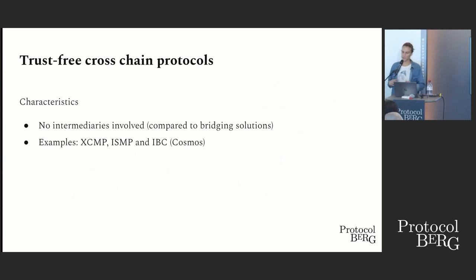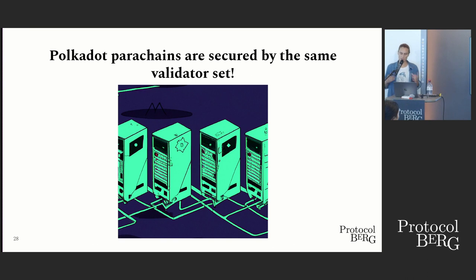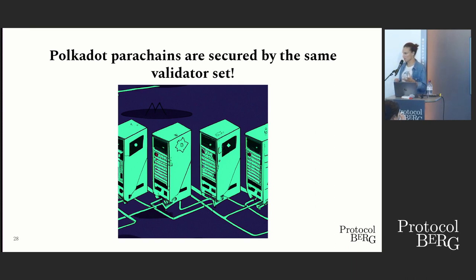If we can assume that two chains already have some degree of trust, we can use protocols that leverage this assumption to create efficient ways to send messages between chains. We'll be looking at XCMP, which is Polkadot's native message passing protocol. Polkadot-powered chains are secured by the same validator set — this is one of the core offerings of Polkadot, what we call the shared security model.